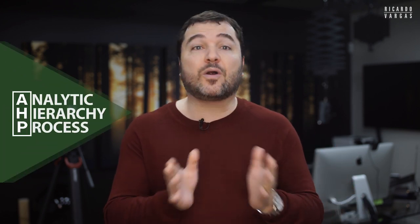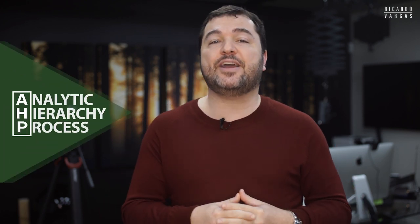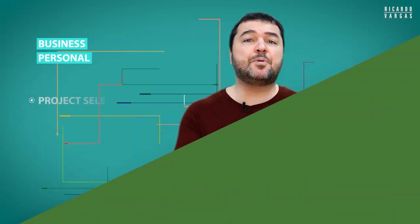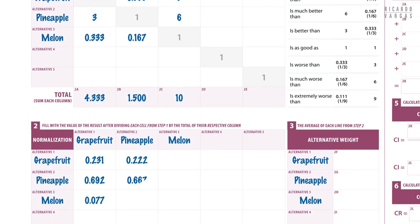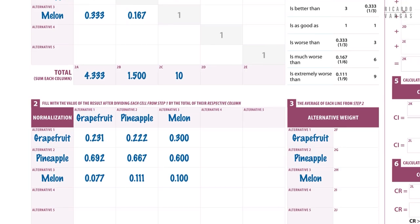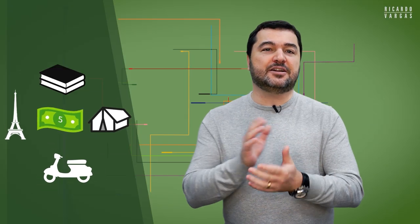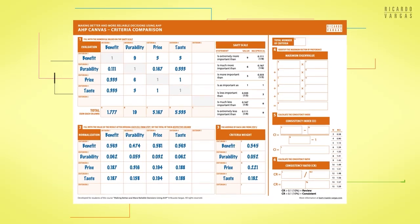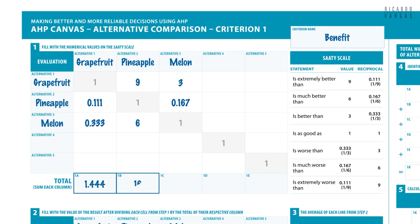In my new online course, I will teach you how to use one of the most powerful tools to support your decisions, the AHP or Analytical Hierarchy Process. In a self-paced learning environment, you will be able to understand and practice how to calculate preferences using a reliable and logical mathematical process.